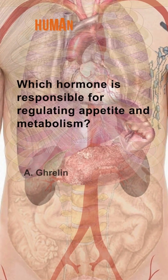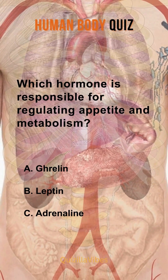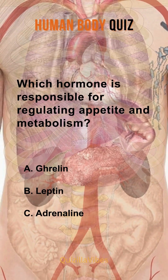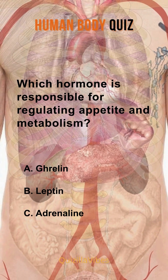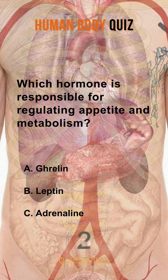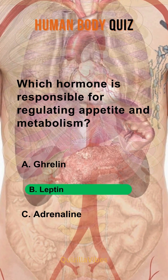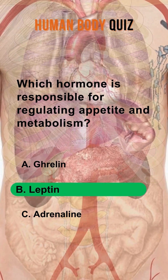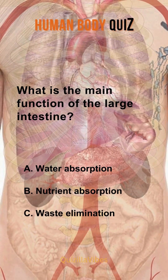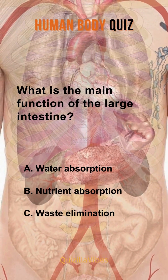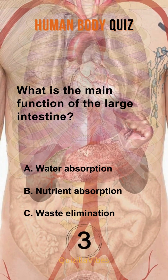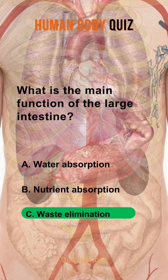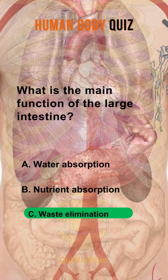Which hormone is responsible for regulating appetite and metabolism? Leptin. What is the main function of the large intestine? Waste elimination.